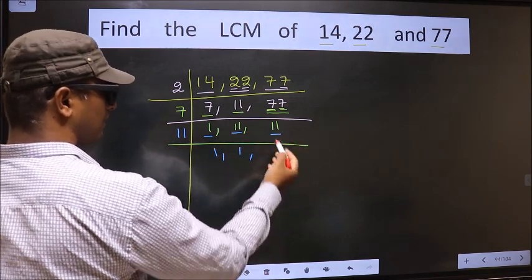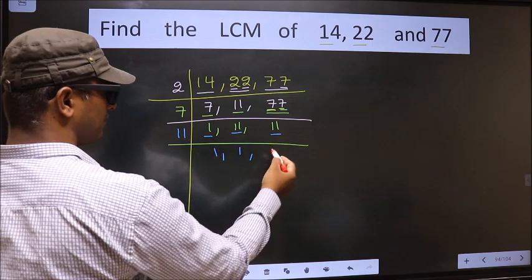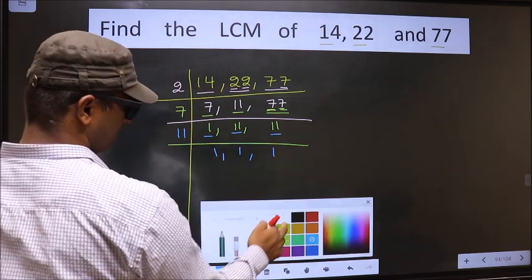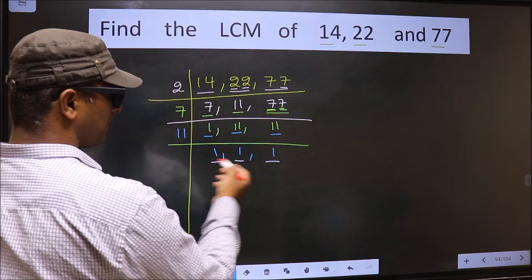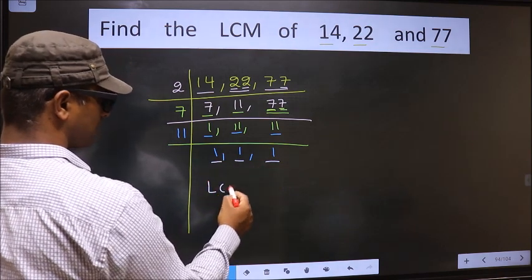The other number 11. When do we get 11 in 11 table? 11 times 1 is 11. We got 1 in 11. We got 1 in all the 3 places. So, our LCM is.